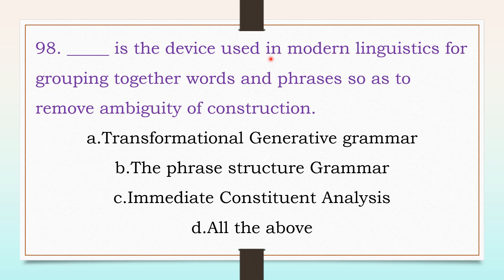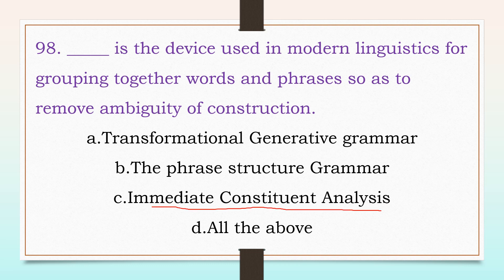Which is the device used in modern linguistics for grouping together words and phrases so as to remove ambiguity of construction? Options: transformational generative grammar, phrase structure grammar, immediate constituent analysis, or all the above. The answer is: immediate constituent analysis.